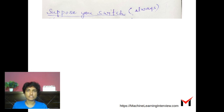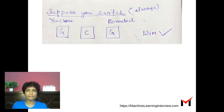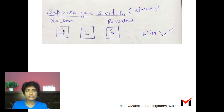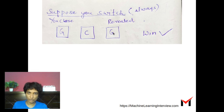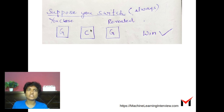What happens if we switch? We decide that whatever we see, we are going to switch. Let's go through the three possibilities. First, you chose the first door with a goat. The host would reveal to you the other goat — that door 3 has a goat. If you choose to switch, you will end up switching to the second door, which has a car, and you win.